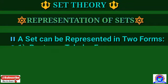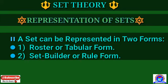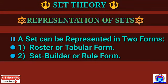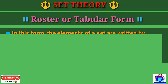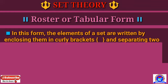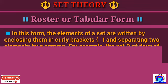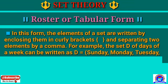Now we understand the representation of sets. A set can be represented in two forms: number one, roster or tabular form; and number two, set builder or rule form. In the roster or tabular form, the elements of a set are written by enclosing them in curly brackets and separating two elements by a comma.